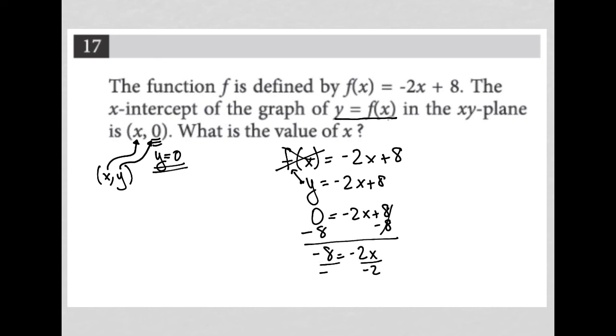I am dividing both sides of the equation by negative 2, and I'm left with x is equal to 4. So my x-value for the x-intercept is 4.